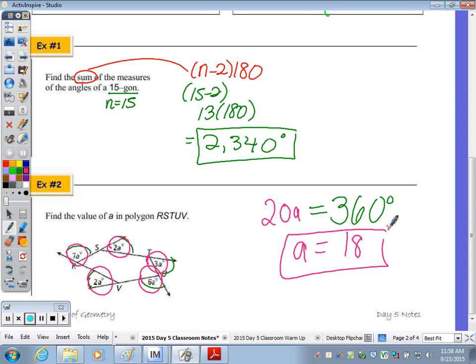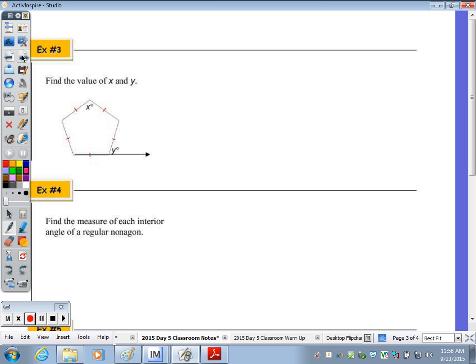Example number 3. Find the value of x and y. It's noting in the picture with those markings that all 1, 2, 5 sides are congruent. X represents one of the interior angles and y represents one of the exterior angles. If all sides are the same, what's true about all angles? They're also the same measure or congruent.